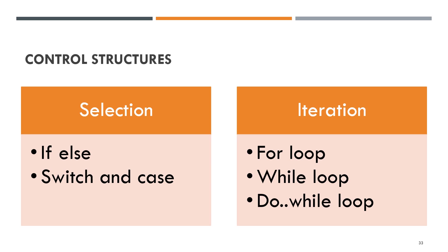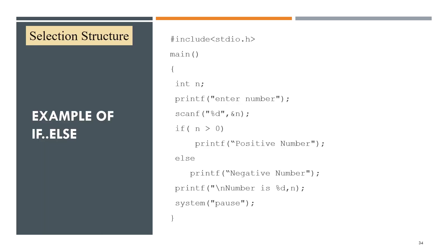Next, control structures using selection and iteration. Selection is done using if, if-else, or switch and case. Iteration can be done using for loop, while loop, and do-while loop. This is an example of using if-else selection structure to check if n is greater than zero — print positive number; else, print negative number.